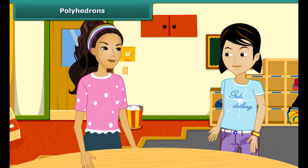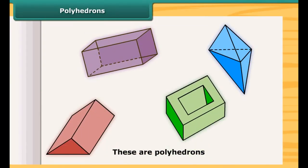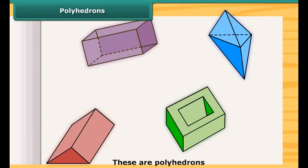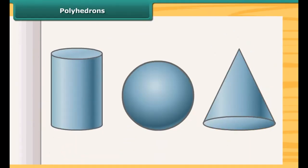Do you know what we call a solid having flat faces, edges, and vertices? No. Those solids are called polyhedrons. Are these objects polyhedrons? No, these are not polyhedrons. You are right — these are not polyhedrons because they do not have flat faces.